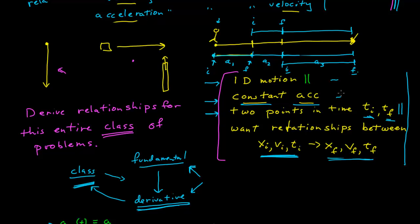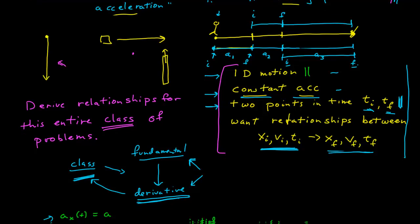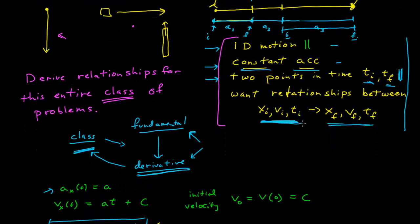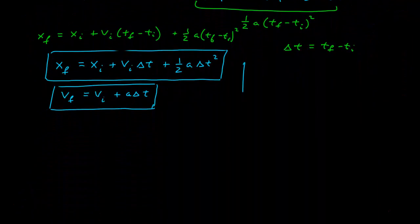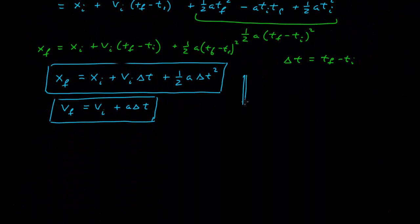But it's important to know where these come from, but also see this type of process where we derive expressions from more fundamental relationships that we can now use any time. These two equations we use any time that these conditions are valid: one-dimensional, constant acceleration, where I have two specific points in time, t initial and t final. I now have the relationships between xi, vi, and initial time, and the final position, velocity, and time.